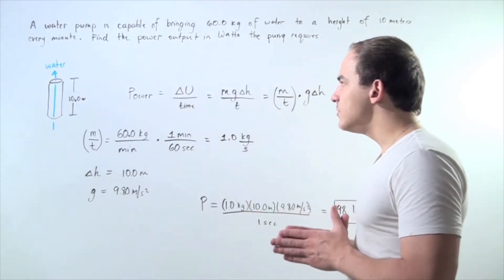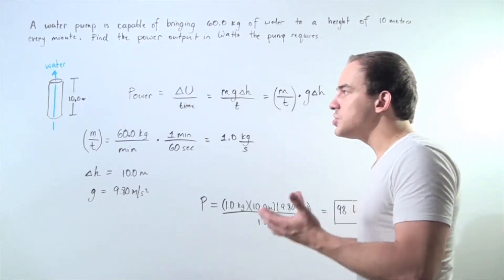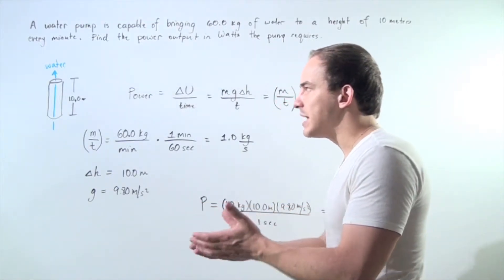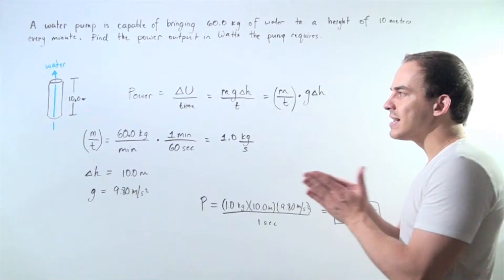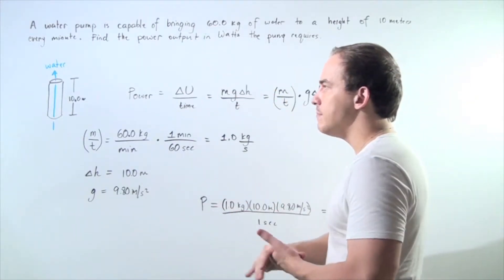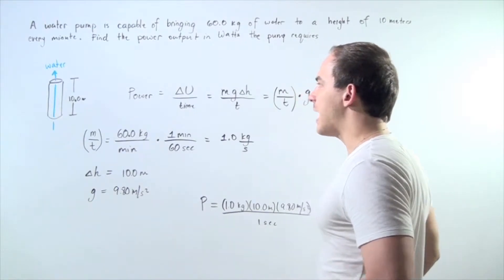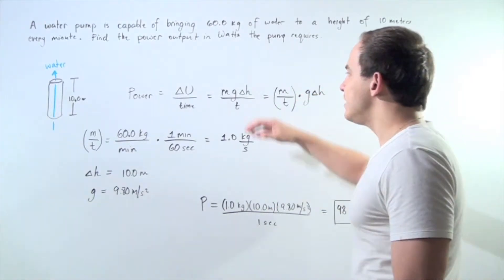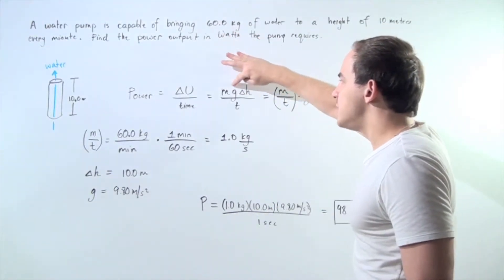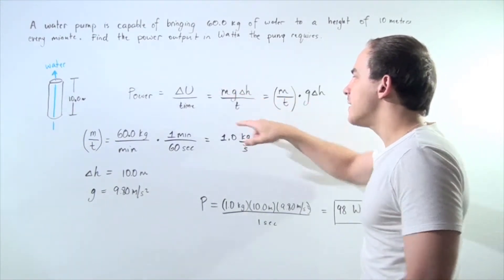The change in energy is given by the change in gravitational potential energy because our mass goes up a height of 10 meters. That means change in gravitational potential energy divided by time is equal to mass times g times change in height divided by the time.